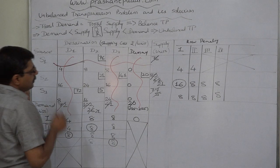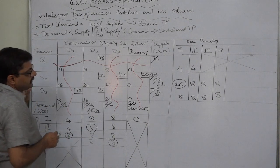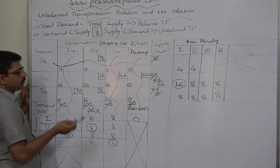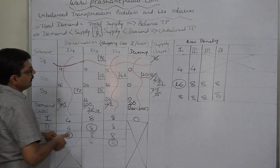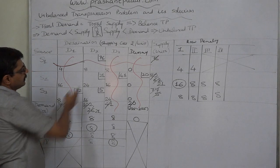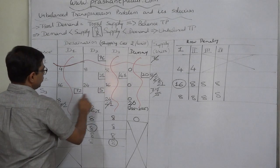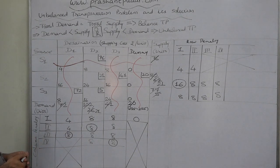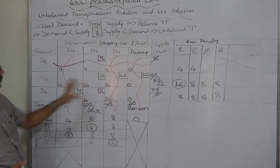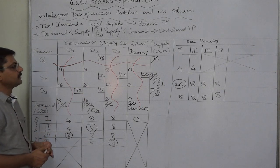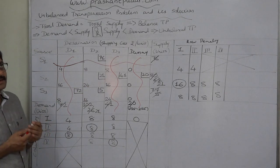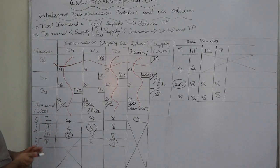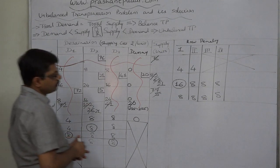Let us count the number of occupied cells: there are 6 allocated cells. The table has 4 columns and 3 rows, so the required number of allocations for a non-degenerate solution is 4 + 3 − 1 = 6. The count matches, so this is a non-degenerate solution.